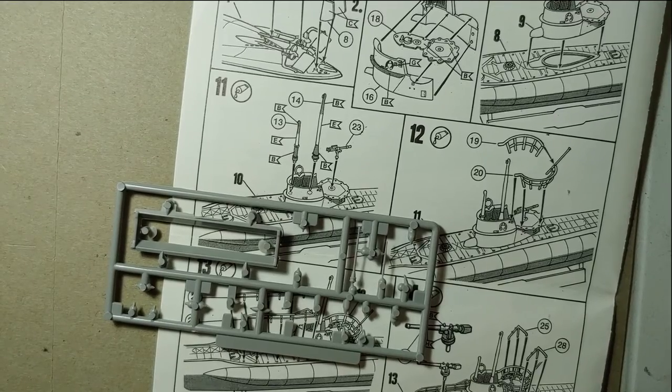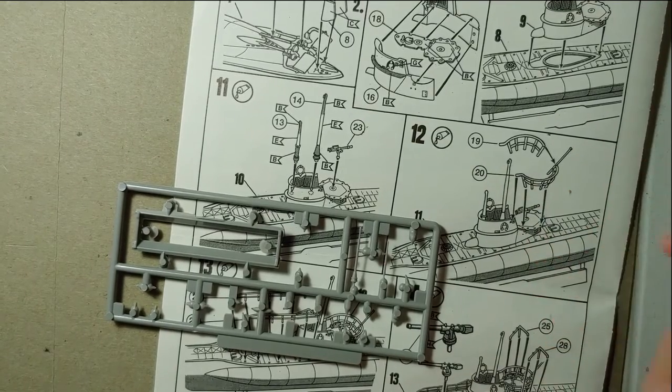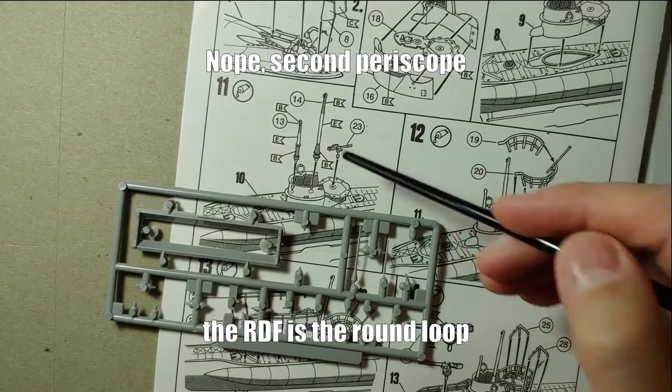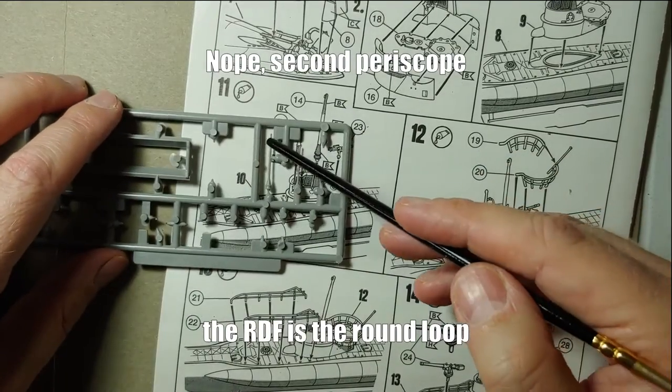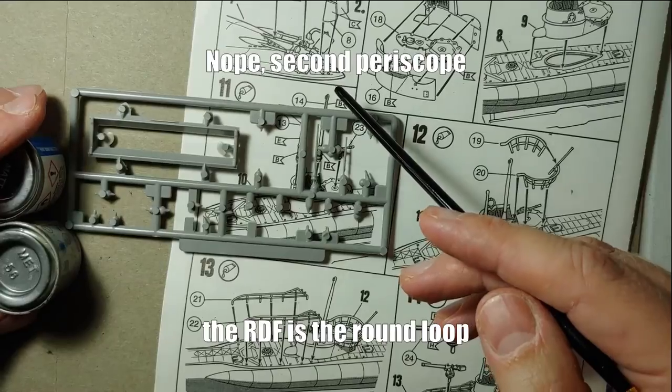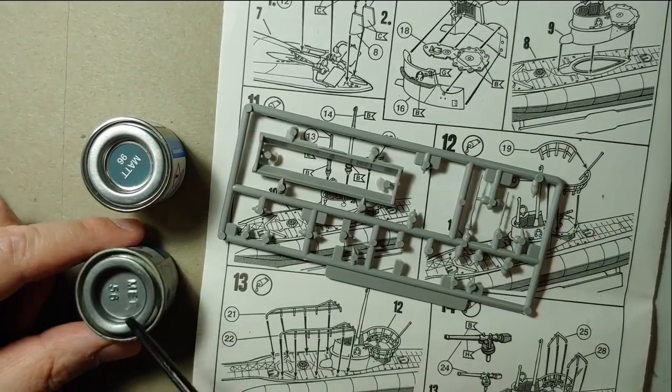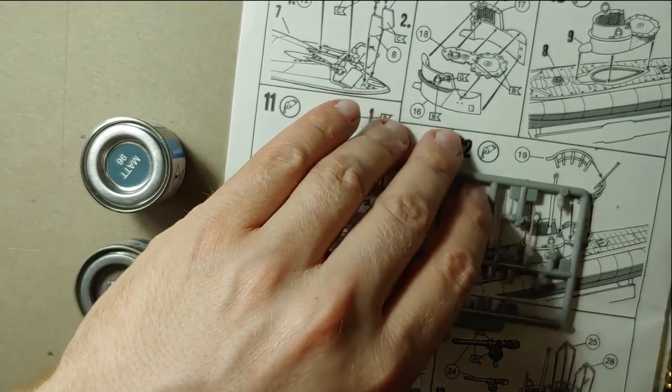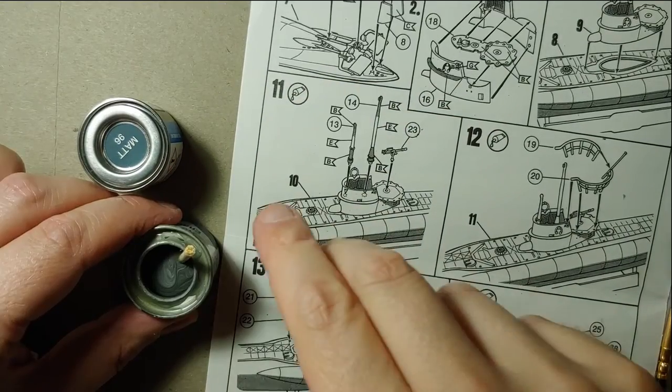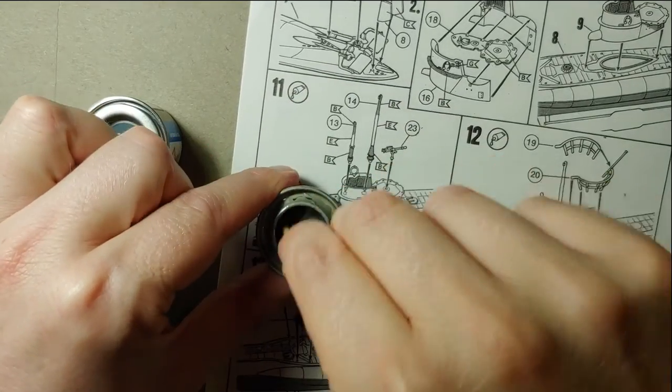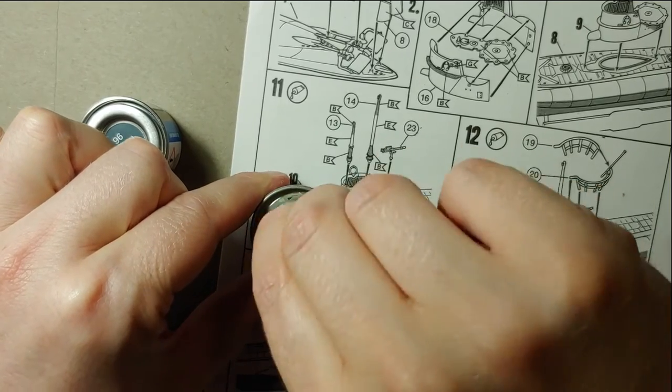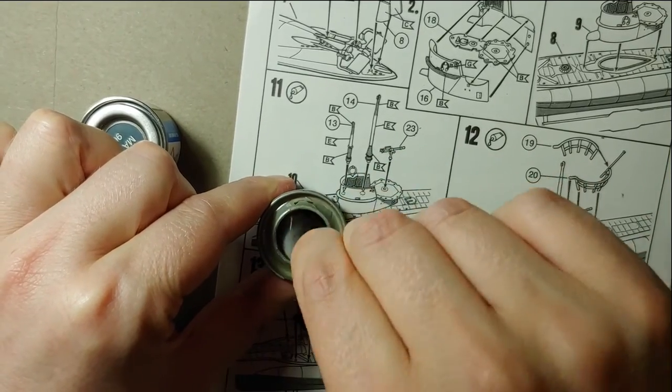Next up I'm dealing with the periscope and what I presume is maybe a radio antenna. These need a custom paint job still, so there's going to be a sort of matte silvery color and the darker color that I've been using for the decks so far. So I give these a good stir and then give the two a quick paint before we can fit them in.